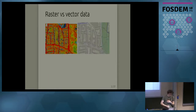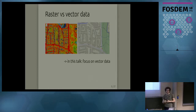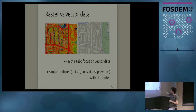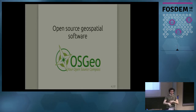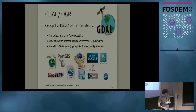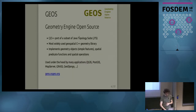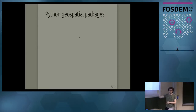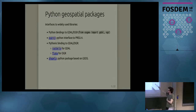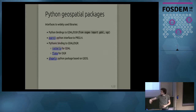For this audience I don't have to explain the difference between raster and vector data, but I mention it to say that in this talk I will focus on vector data — typical simple features with attributes. There is a lot of open source geospatial software: GDAL, GEOS. In Python it's no different; there are many Python packages that build upon those base libraries — PyProj, rasterio, Fiona, and Shapely, which wraps the GEOS library.